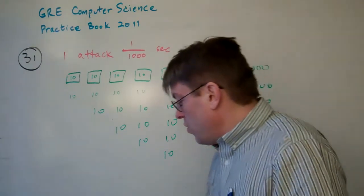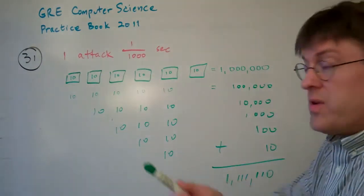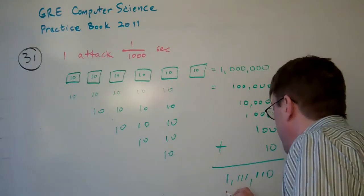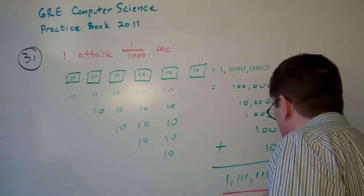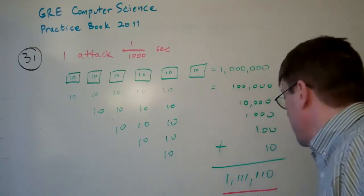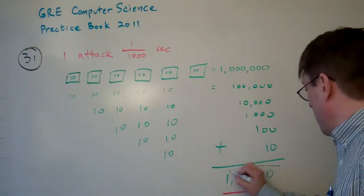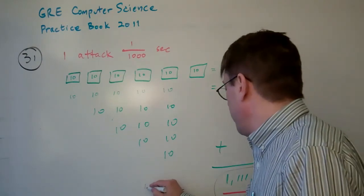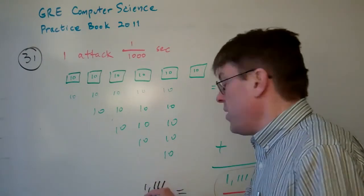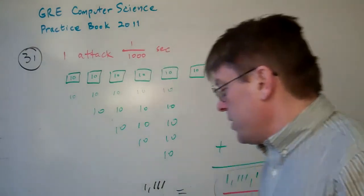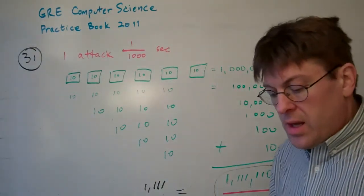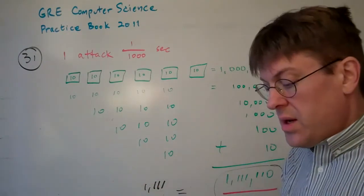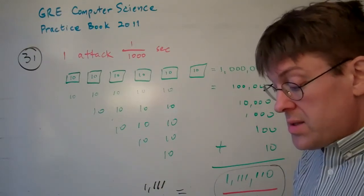Now, if we can do one of these combinations every 1/1000th of a second, we just divide 1,111,110 by 1,000. That equals approximately 1,111 seconds to do a brute-force attack on all of these combinations.